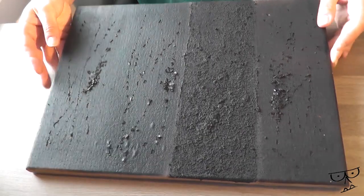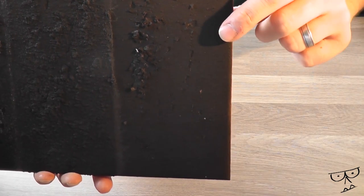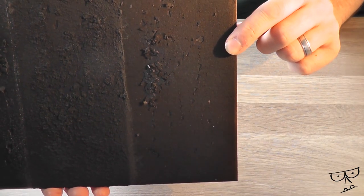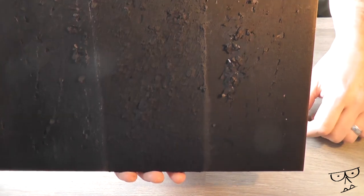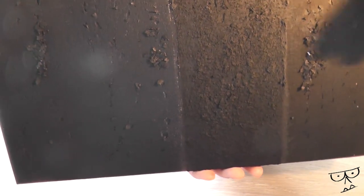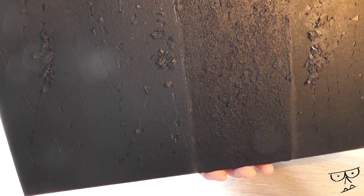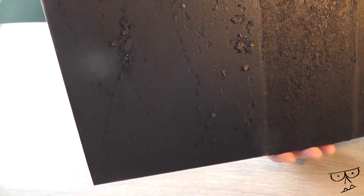Everything has been primed now. This is just the black primer. This one is the texture paint. This one is the spray can metallic, and this one is the sand.